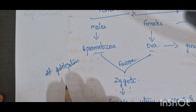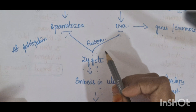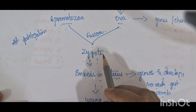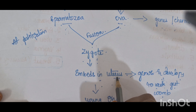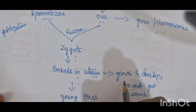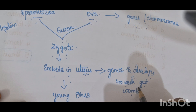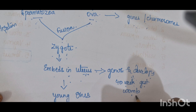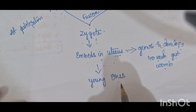During fertilization, spermatozoa and ova fuse to form a zygote. This zygote embeds in the wall of the uterus, where it grows and develops over a 40-week gestational period in the womb of the female, producing young ones.